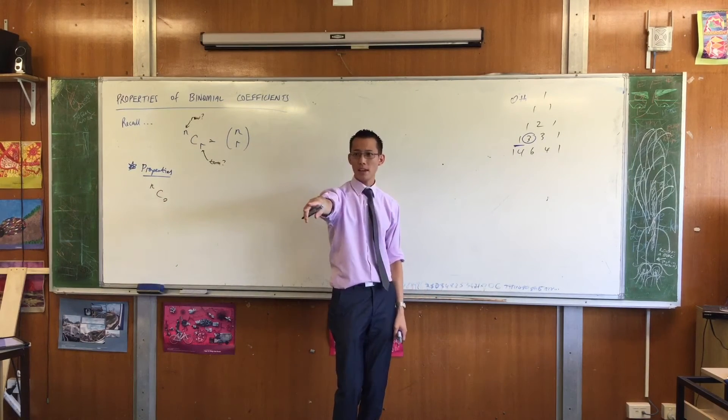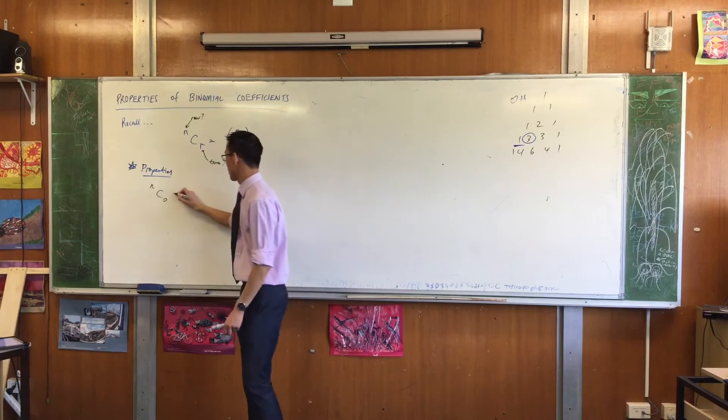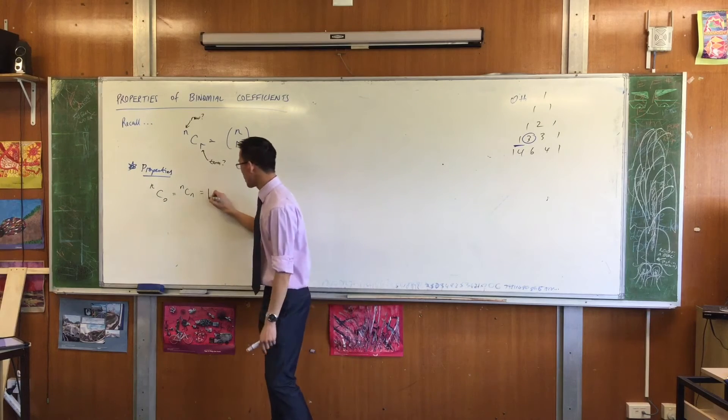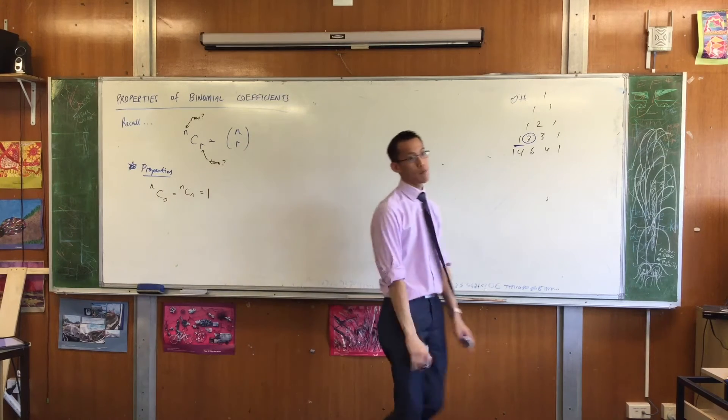So I can say any row, so I'm going to say nC, you know, that can literally mean anything I want. The zeroth term is nC0. That's the zeroth term along the row. What about the last term? The last term is going to be nCn. They're both equal because they are both always equal to 1. So this is our first property.